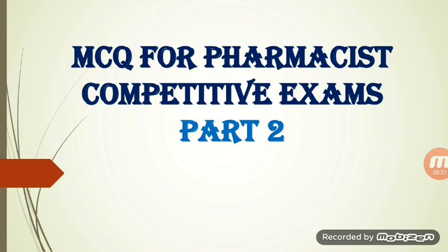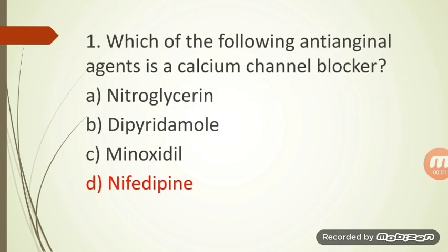Here we start our session. First question: Which of the following anti-anginal agent is a calcium channel blocker? Option A: Nitroglycerin, Option B: Dipyridamol, Option C: Minoxidil, and Option D: Nifedipine. The answer is nifedipine, but before going to the answer, we have to understand what are anti-anginal drugs and among that which are the calcium channel blockers.